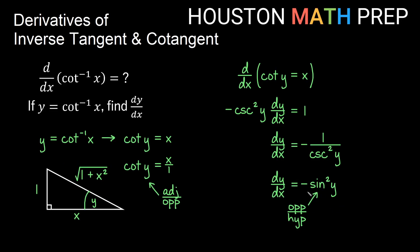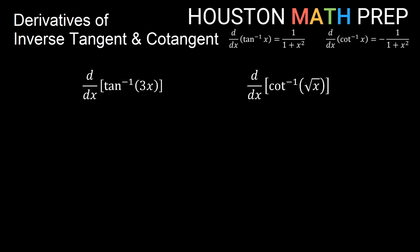The negative out front tells us that the derivative formula for inverse cotangent is negative 1 over 1 plus x squared. We've got our formulas up in the corner — let's go ahead and work out a few derivatives. For the derivative of inverse tangent of 3x, we'll use the inverse tangent rule.